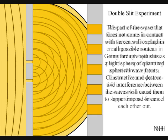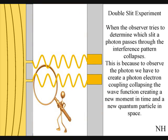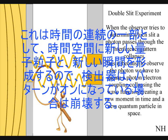When the observer turns on a detector to determine which slit a photon passes through, the interference pattern will collapse. This is because to observe the photon, we have to create a photon-electron coupling, collapsing each wave-front into a new quantum particle that will have its own position in space and time.